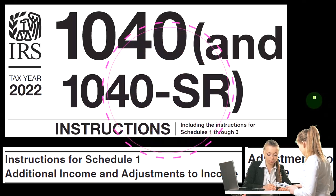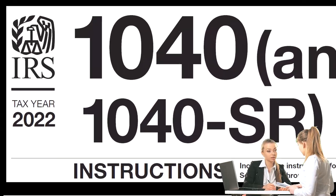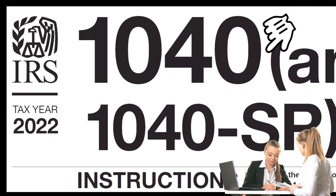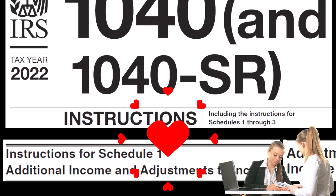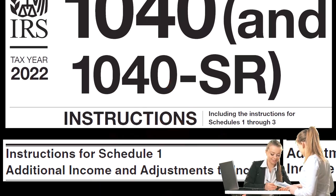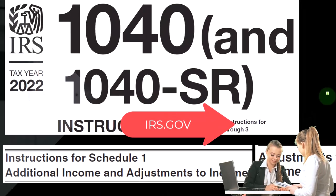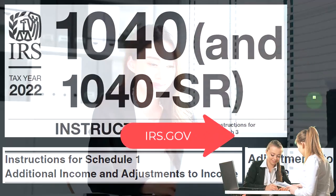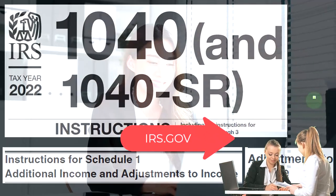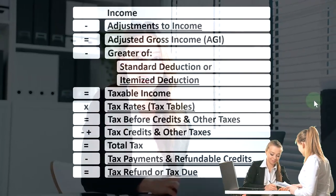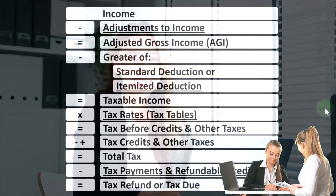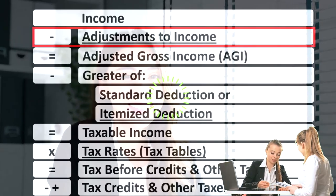Most of this information comes from the Form 1040 Instructions, Tax Year 2022, Instructions for Schedule 1 Additional Income and Adjustments to Income, which you can find on the IRS website, irs.gov.